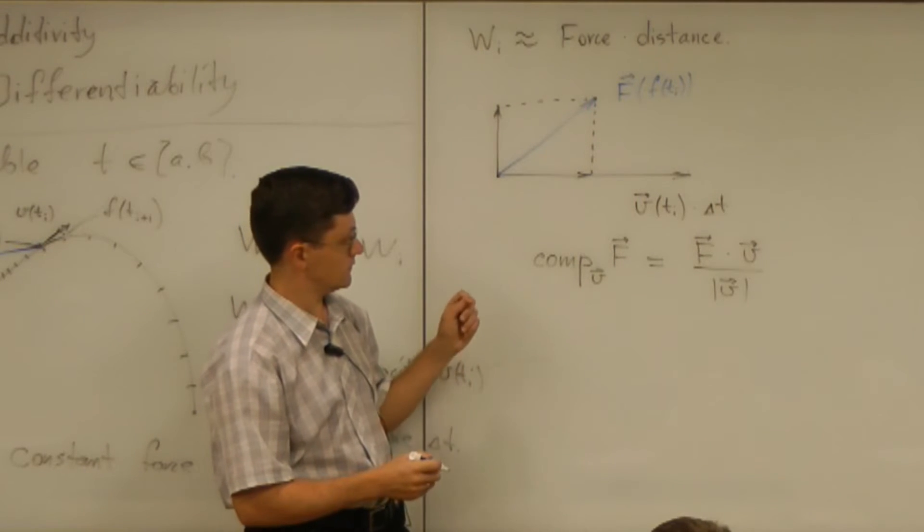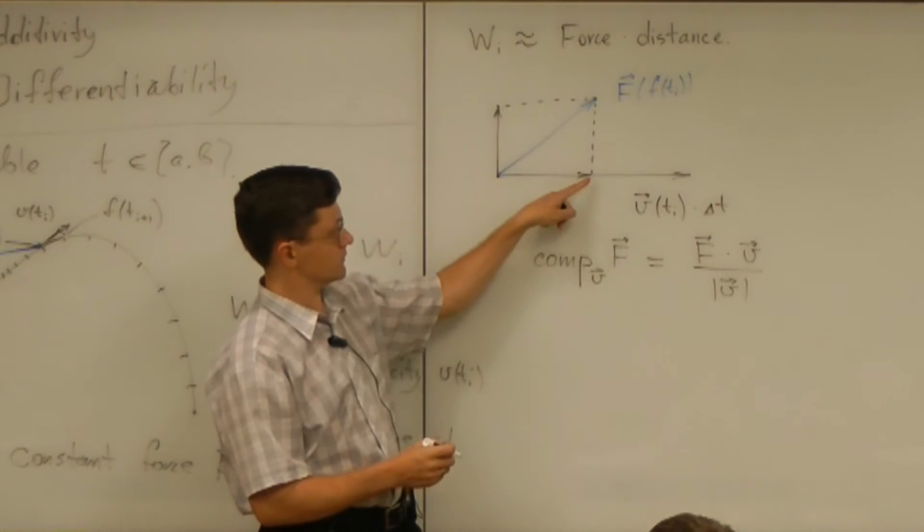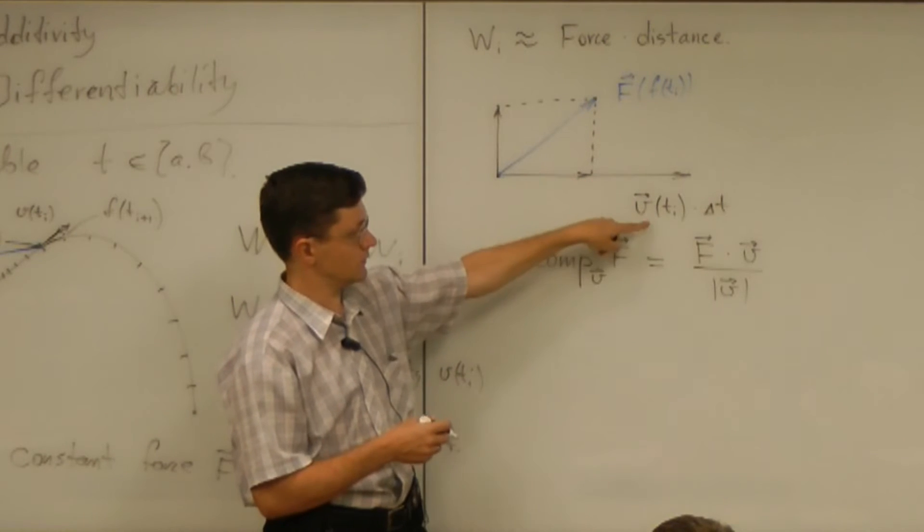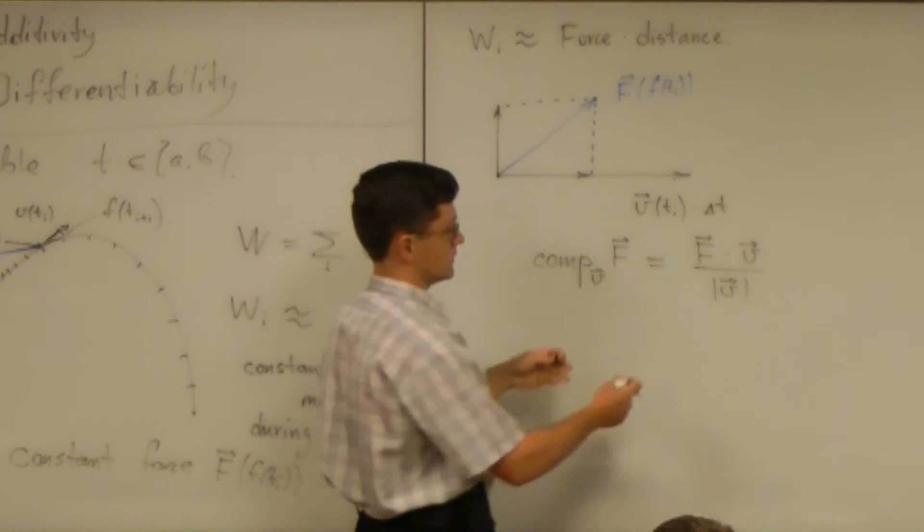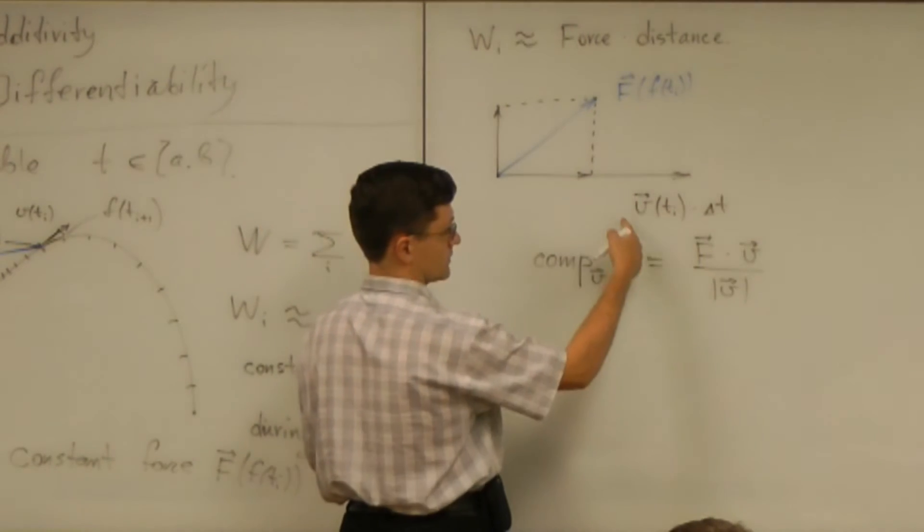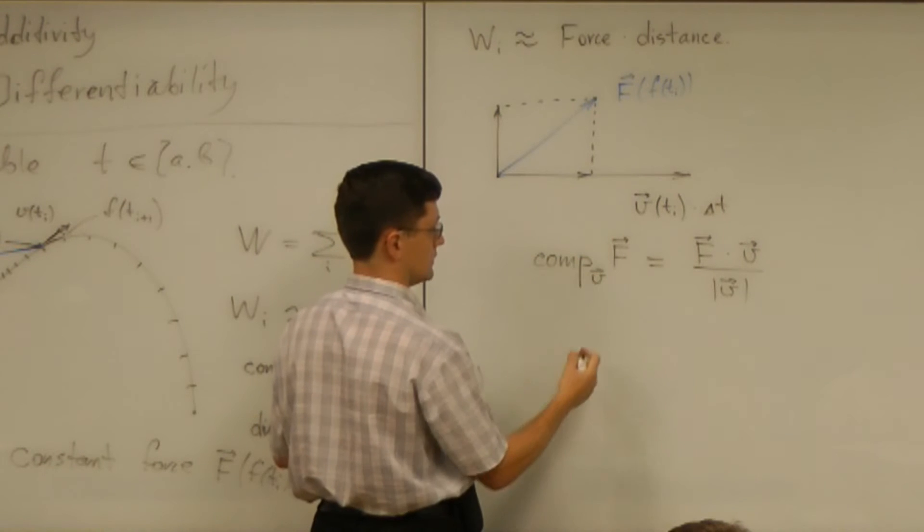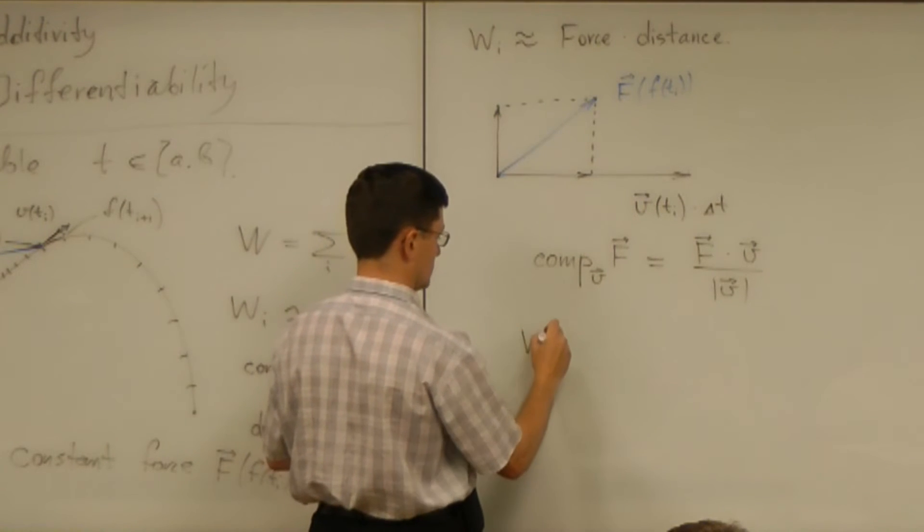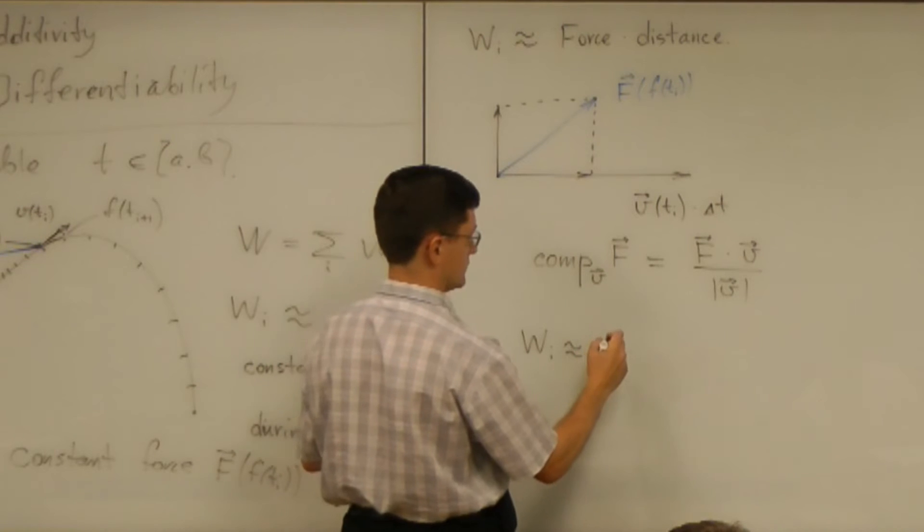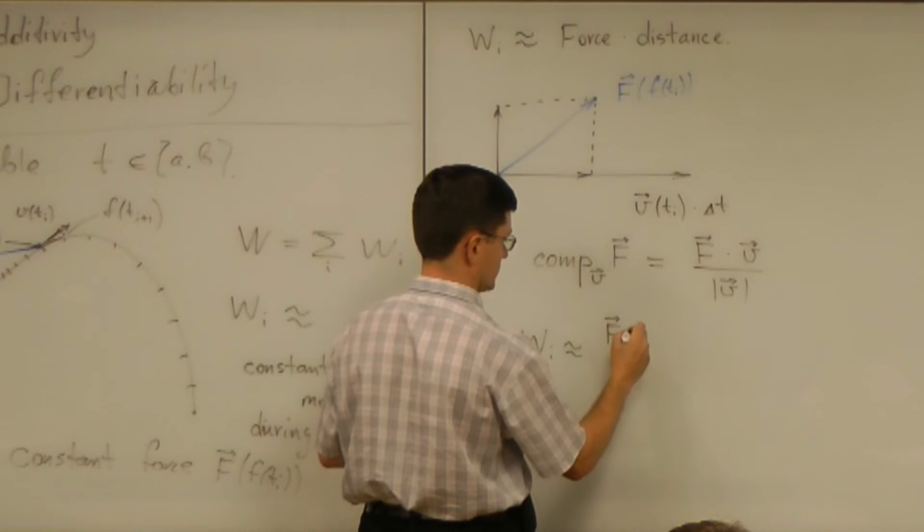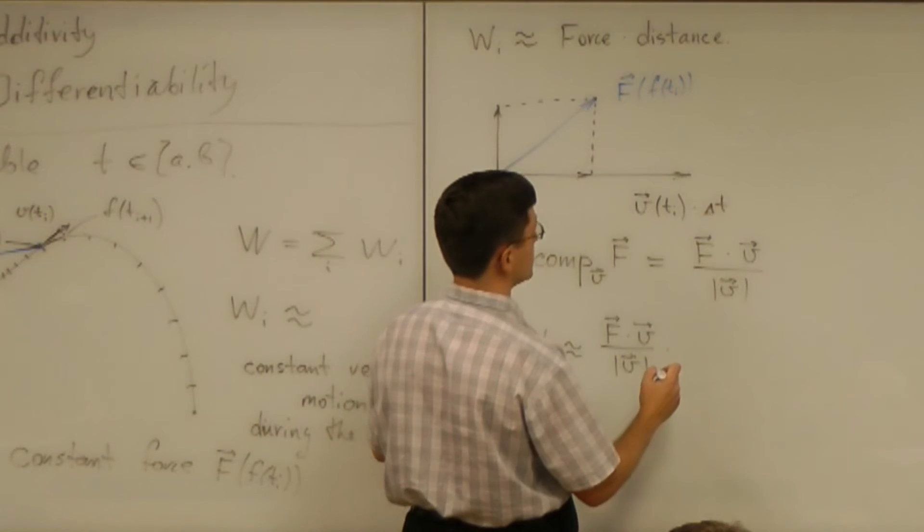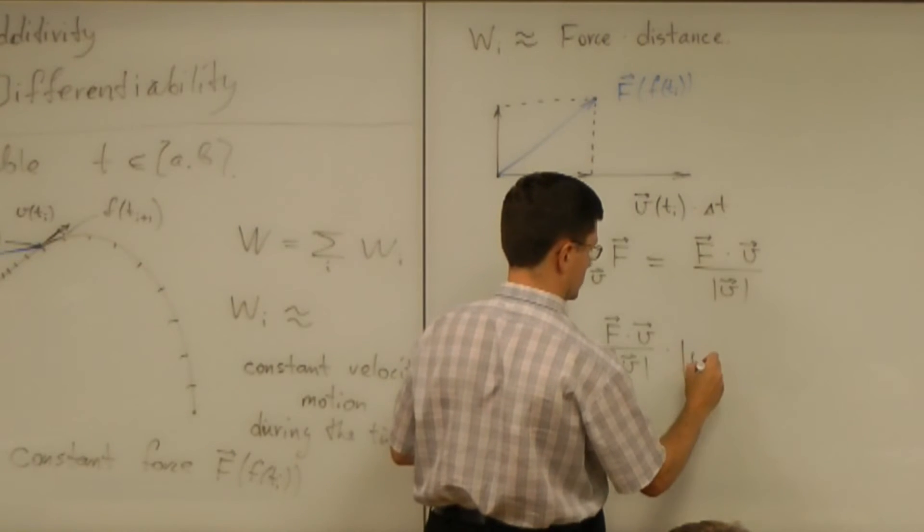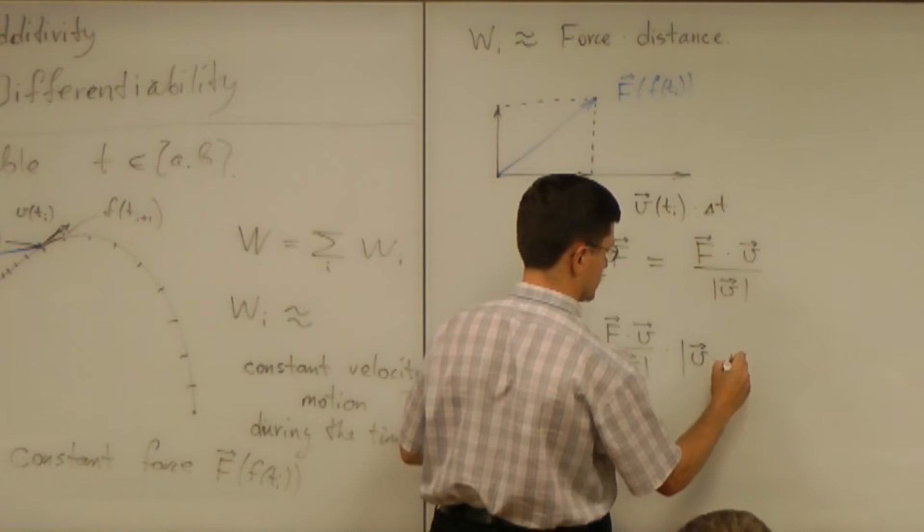And then this component has to be multiplied by the displacement. So now this number has to be multiplied by magnitude of that vector. So the work is approximately F dot V divided by magnitude of V multiplied by magnitude of V times delta T.